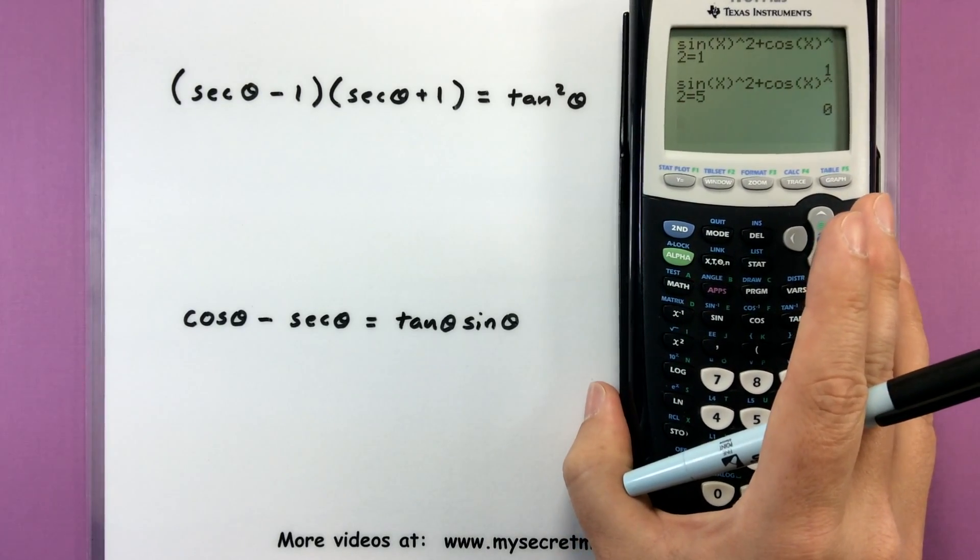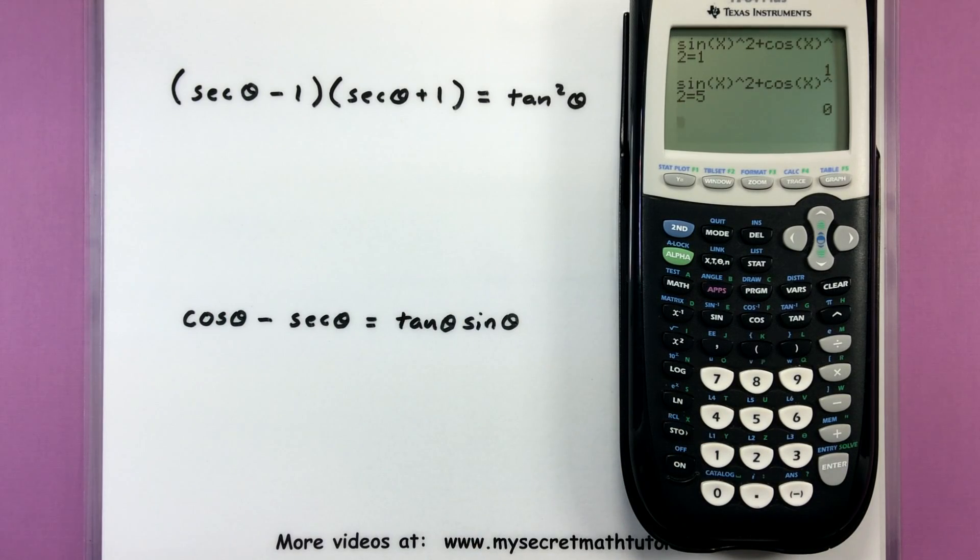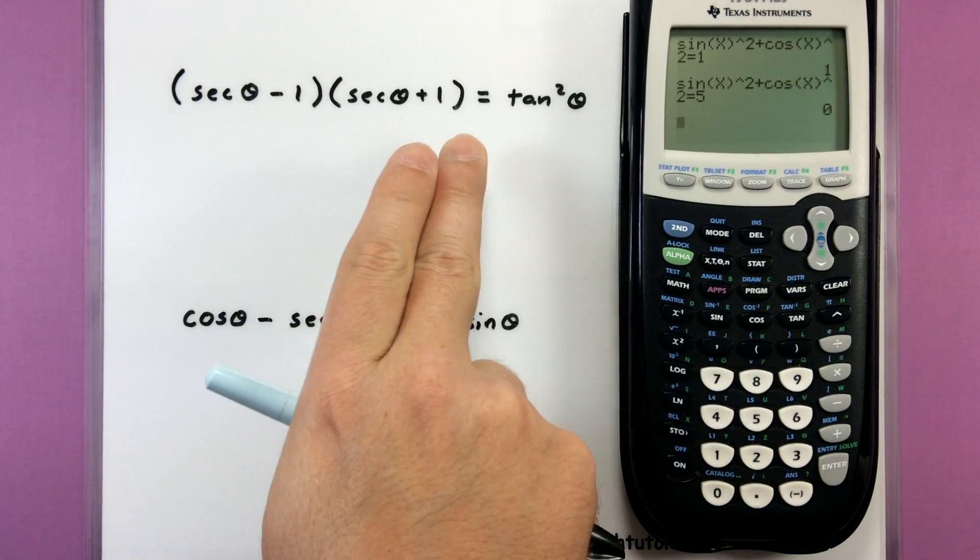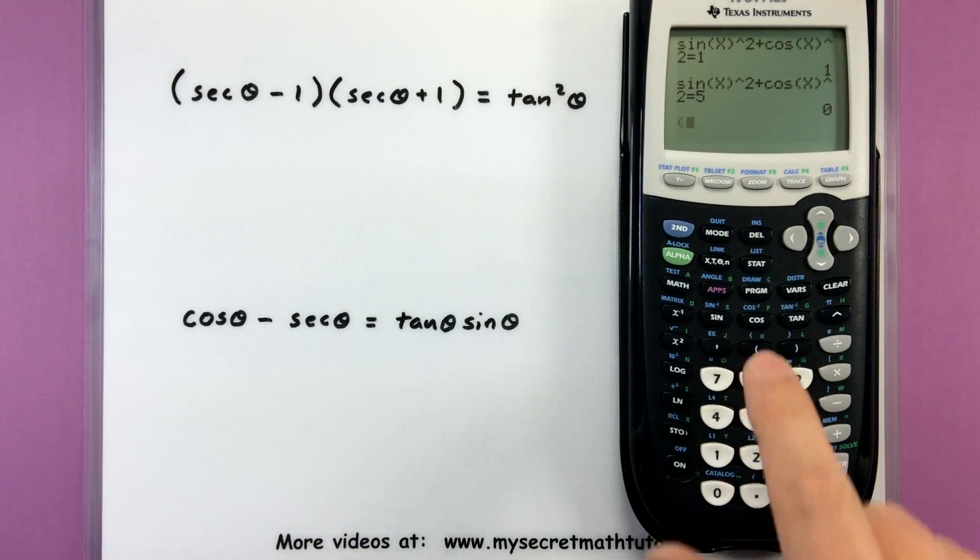So here I have a much more complicated equation here. And I'm not really sure if this is true or not true. So I'm going to use my calculator to help out. So I'm going to type in the left side, find the equal sign in my catalog, and then type in the right side.